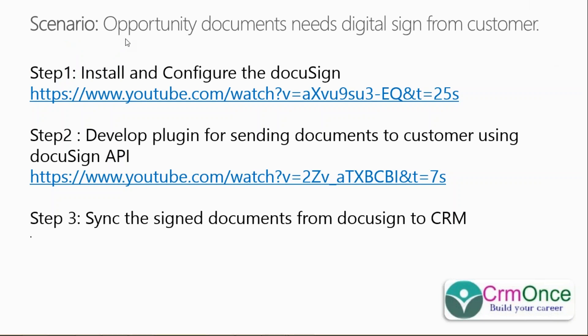We are taking a complete scenario here. For opportunity records where you need opportunity documents, you need a digital signature from the customer. We have selected DocuSign for this purpose. DocuSign allows us to send documents to customers and get their digital signature.